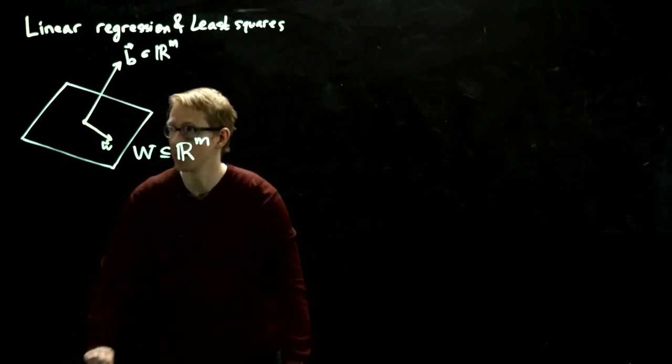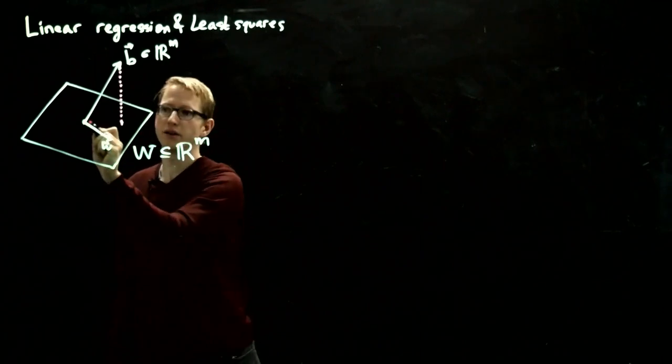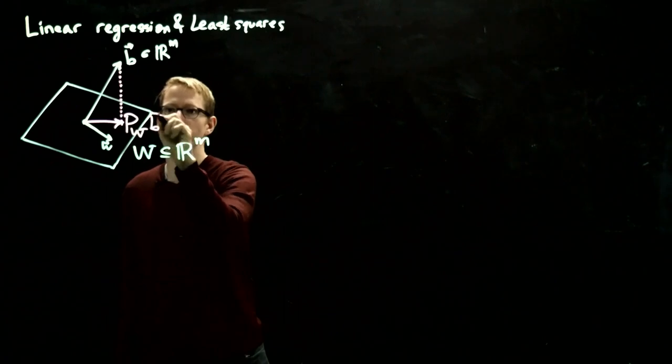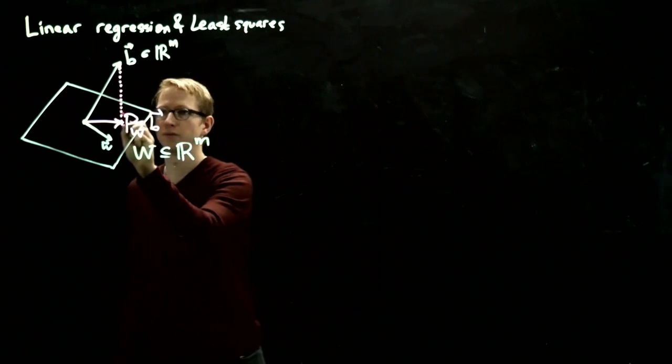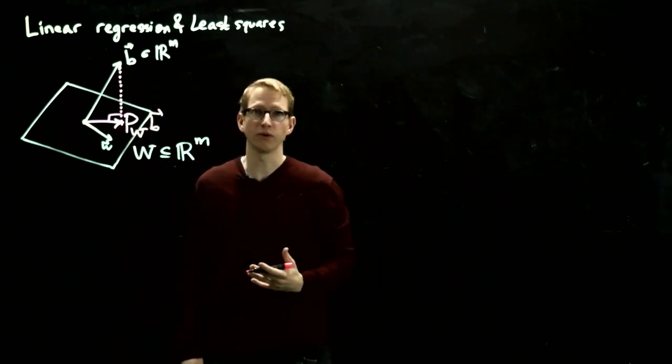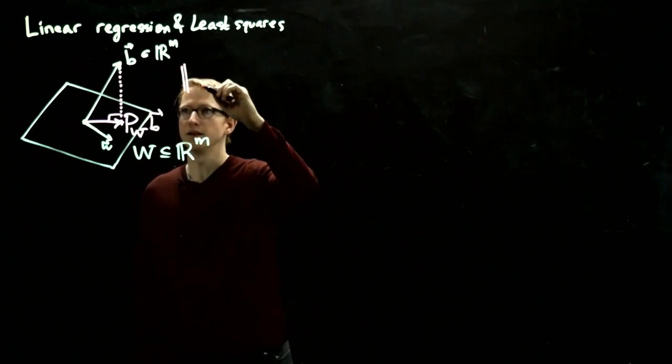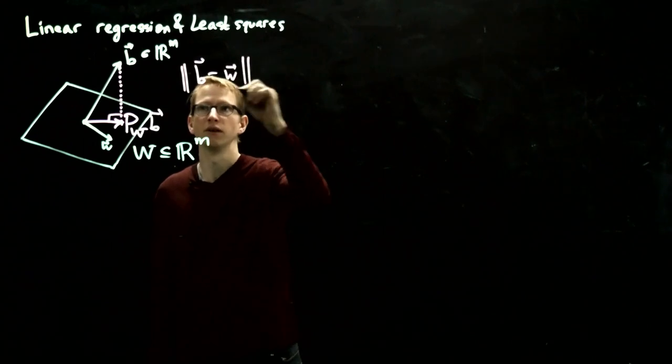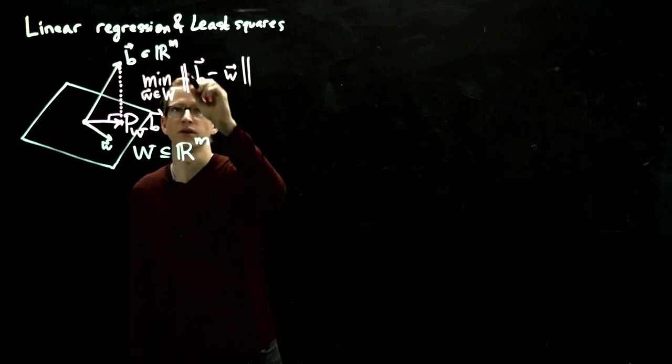Now, just intuitively, if we take the orthogonal projection of b onto W, let's call that P_W(b), so the projection of b onto the subspace W, the orthogonal projection, we suspect that that would minimize this distance. The distance that we're trying to minimize is ||b - w||. Minimize this over all w inside of this subspace W.